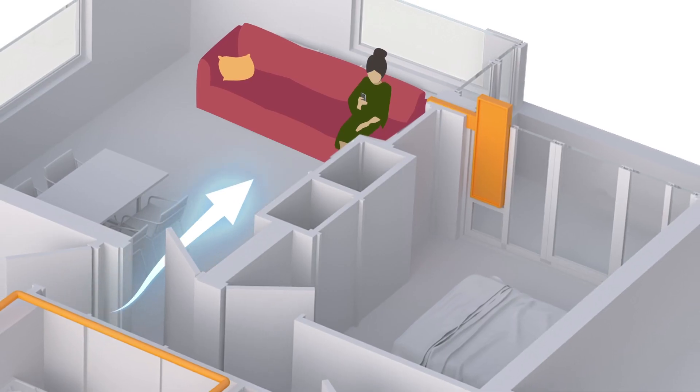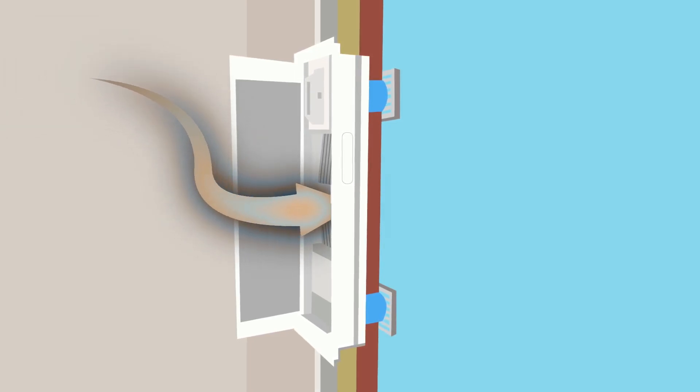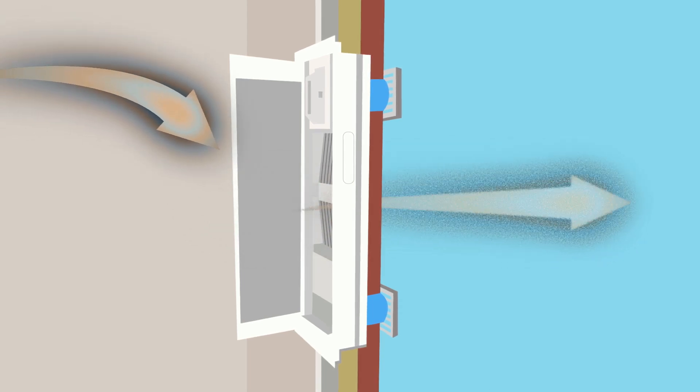Where people are, the air is fresh. This breathing window is called Fresh R. It continuously measures CO2 and humidity.